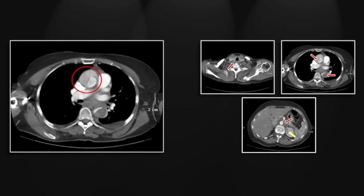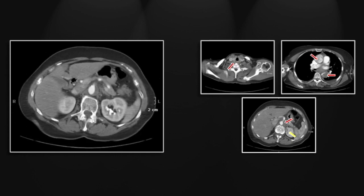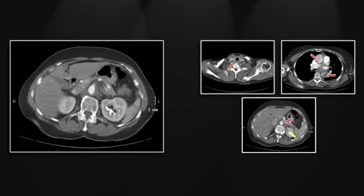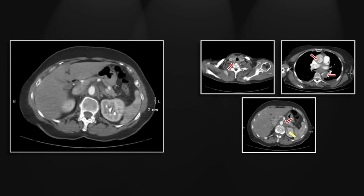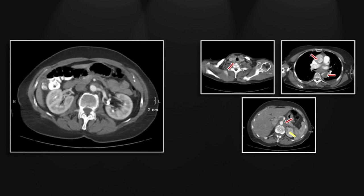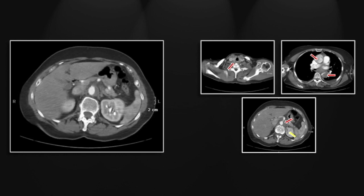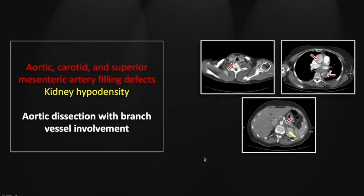There is the carotid involvement, the ascending aortic and descending aortic involvement. Now watching for branch vessel involvement: first the celiac just at its base, next the superior mesenteric origin involvement which is indisputable. Look at the left renal artery — wrapping around its base is that dissection. The cortical defect is the telltale sign of left renal artery involvement. So this is another case of aortic dissection with extensive branch vessel involvement.